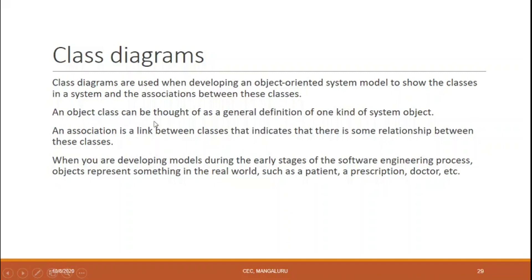An object class can be thought of as a general definition of one kind of system object. An association is a link between classes that indicates there is some relationship between them. For example, consider patient and patient record — for one patient there will be one patient record. To create a link between two classes we draw an association link.